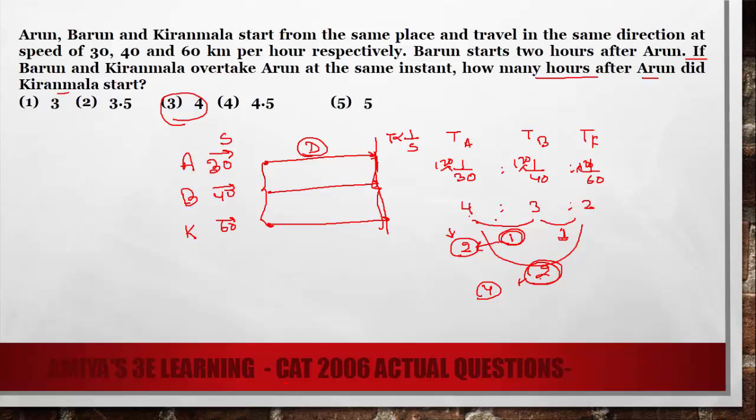How come? According to question, Arun started 2 hours before. So in our sheet of 4, 3, 2, our actual timing should be multiplied by 2: 8, 6, 4. So Arun started 2 hours before Barun and 4 hours before Kiranmala. So our required answer is 4.